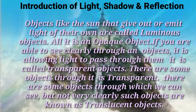There are some objects through which we can see, but not very clearly. Such objects are known as translucent objects.